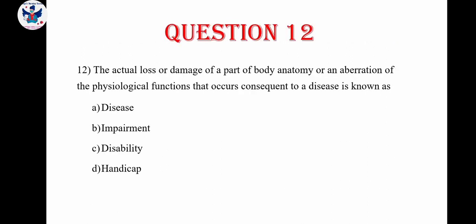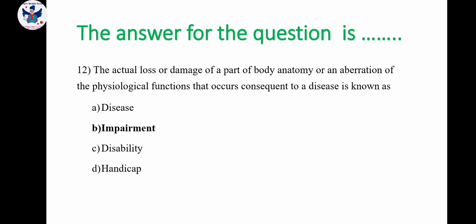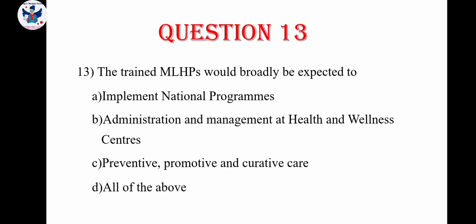Question number 12. The actual loss or damage of a part of body, anatomy, or an aberration of physiological functions that occurs consequent to a disease is known as: A. Disease, B. Impairment, C. Disability, D. Handicap. The correct answer is Impairment, because due to damage the physical function is lost.